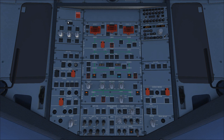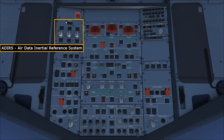The next panel is the ADIRS — Air Data Inertial Reference System. These systems supply air data to the pilot's glass cockpit displays, showing information such as airspeed, altitude, attitude, angle of attack, and various other flight parameters.